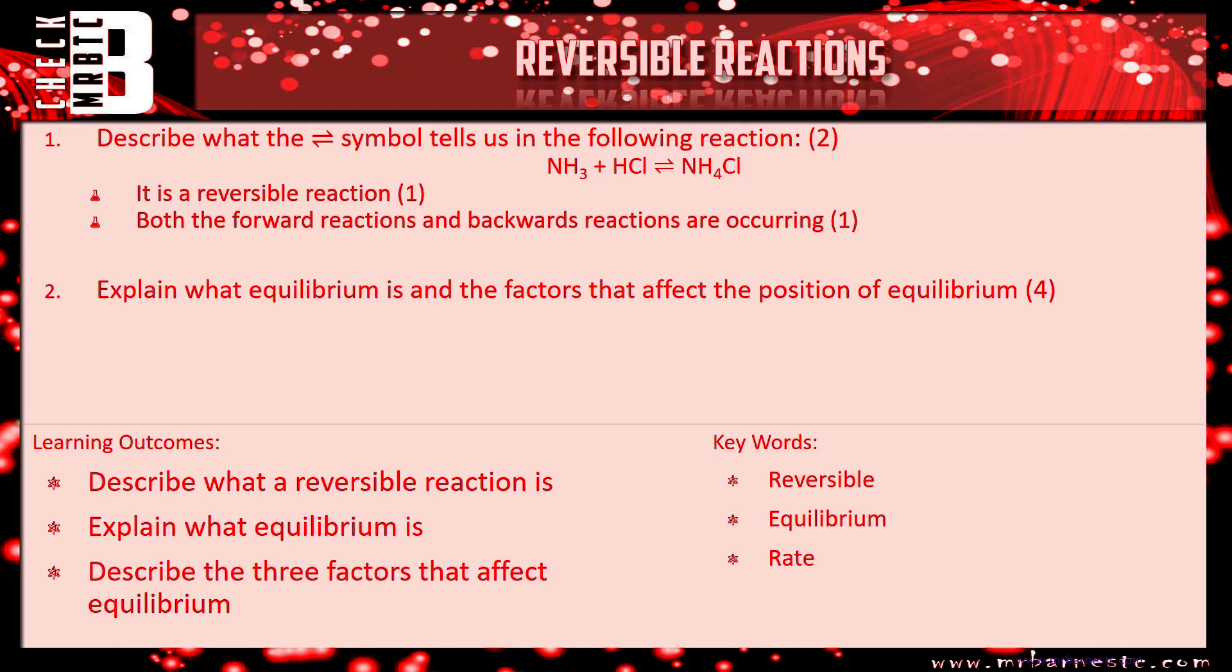Question two, explain what equilibrium is. So nice and simply, both forward and backwards reactions are occurring at the same rate. So you need one mark for both the forward and backwards reactions are occurring and second mark for saying it's happening at the same time, the same rate. It's also in a closed system. Don't forget to put that in there.